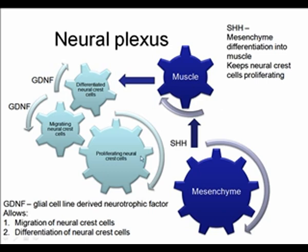Looking at how these ganglia form: we have proliferating neural crest cells and mesenchymal cells. Under sonic hedgehog, neural crest cells are kept proliferating while mesenchymal cells differentiate into muscle. For neural crest cells to leave their proliferating state, migrate, and then differentiate into the cells of the different ganglia, they come under the influence of glial cell line-derived neurotrophic factor (GDNF), which prompts them to stop proliferating, begin migrating, and eventually differentiate.